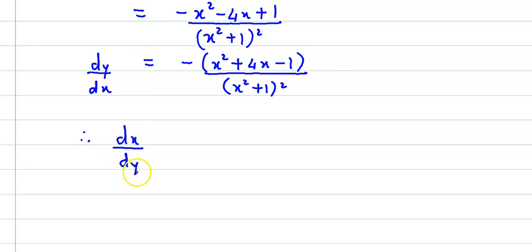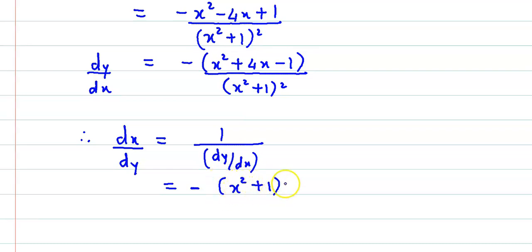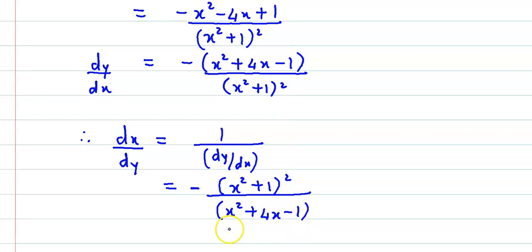यह हमें मिला dy by dx, लेकिन हमें पूछा गया है dx by dy. So therefore dx by dy is equal to 1 over dy by dx, where dy by dx is not equal to 0. Reciprocal लेने पर: dx by dy is equal to minus (x squared plus 1) the whole square upon (x squared plus 4x minus 1). So this is dx by dy — that is the marginal demand.